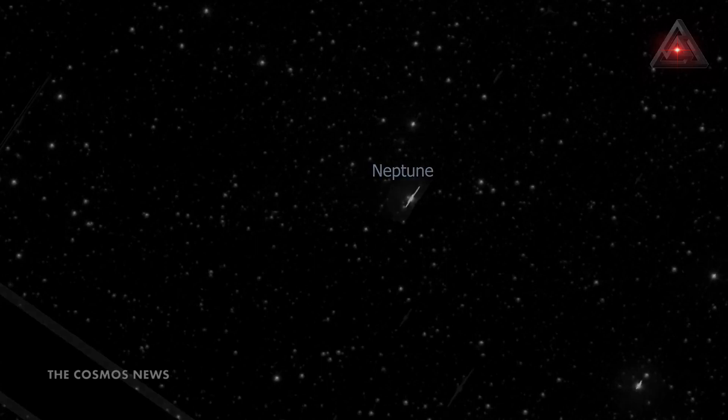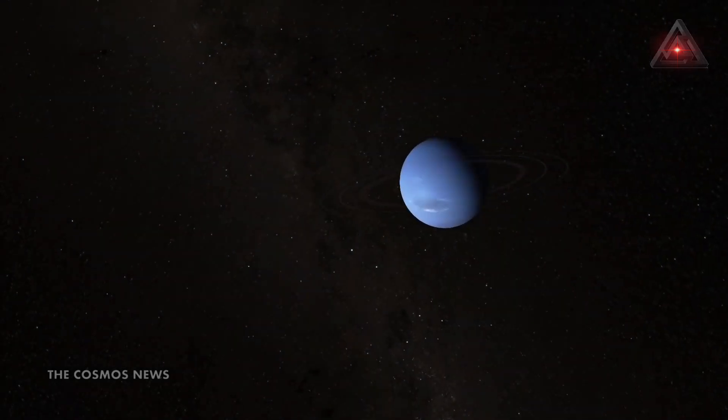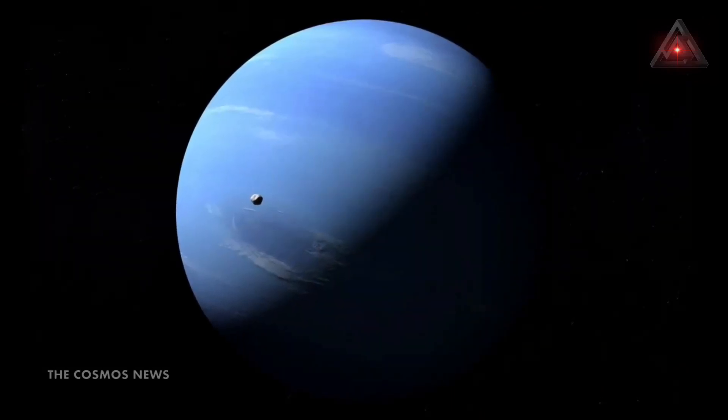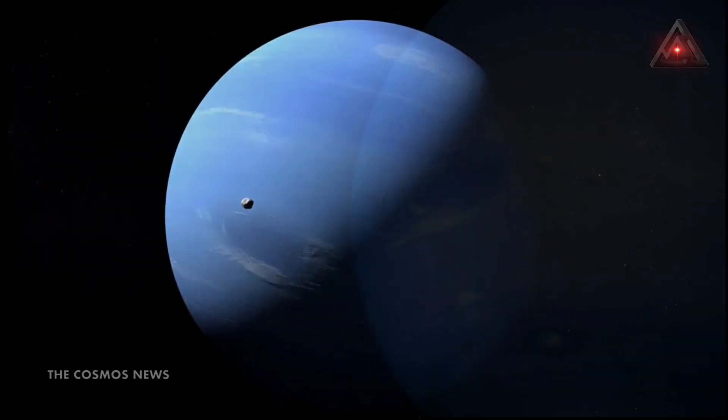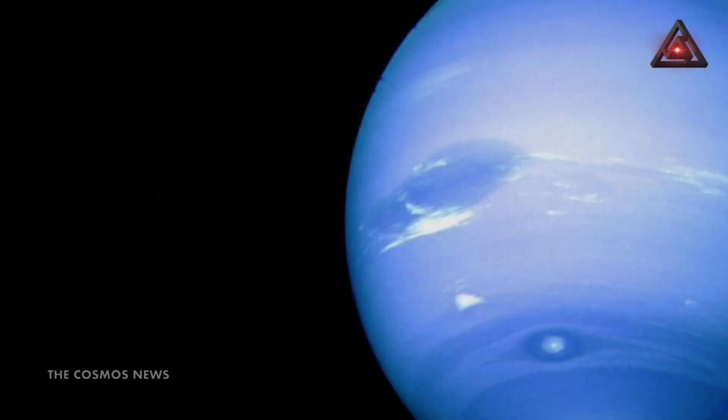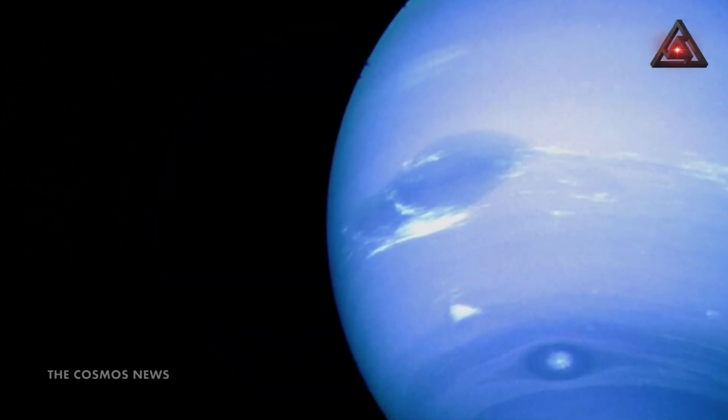This planet is characterized as an ice giant due to the chemical makeup of its interior. Compared to the gas giants Jupiter and Saturn, Neptune is much richer in elements heavier than hydrogen and helium.